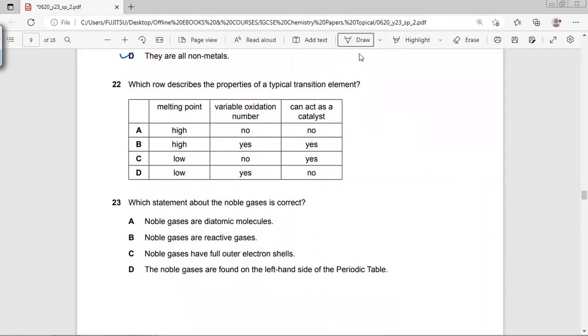Which row describes the properties of a typical transition element? Melting point is high, they are very strong. Variable oxidation number? Yes, they have. Can act as a catalyst? Yes. So it's B.